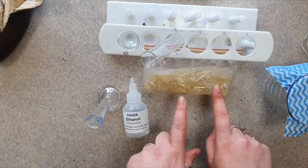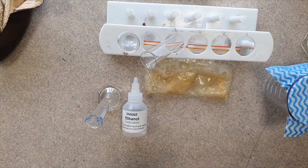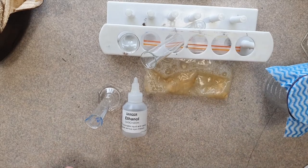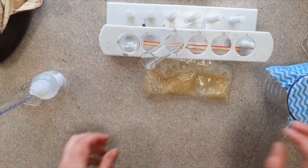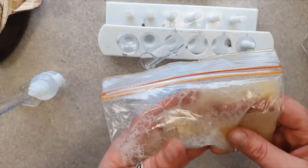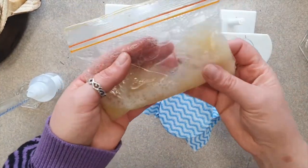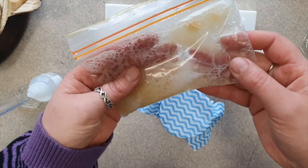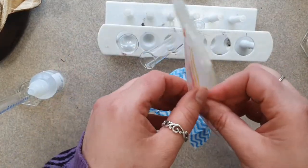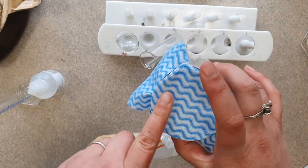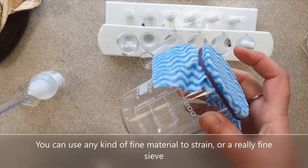So there we have nice mushy banana, and the next step is we want to strain this to get rid of all the chunks because we want to just work with a nice thin solution. So I'm just going to, I've got a beaker here with some chux over the top to strain it. You can do that at home with just a cup.